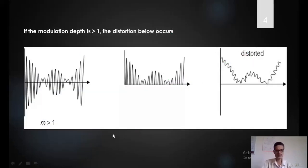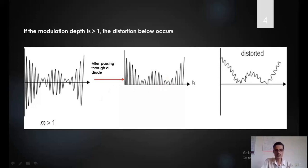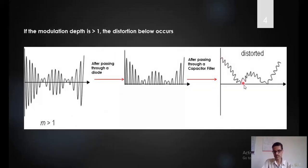Now look at this example. If the depth of modulation is more than 1, distortion will result. This is a modulated signal where we have a phase reversal — some distortion is there. The depth of modulation is more than 1. This is the output of the diode and this is the output of the capacitor filter — it is a distorted recovered message signal. So the condition is that the modulation index or depth of modulation should be less than 1.